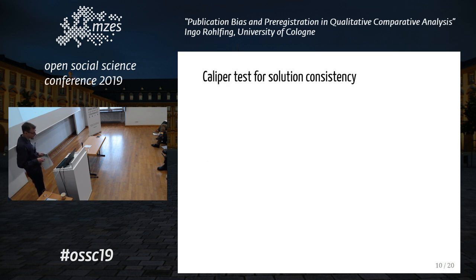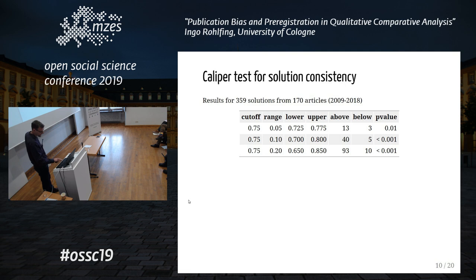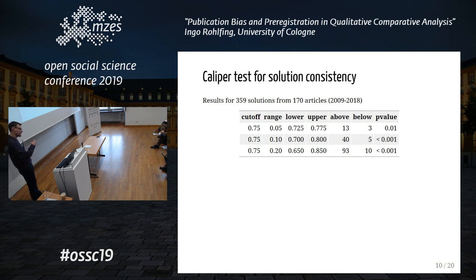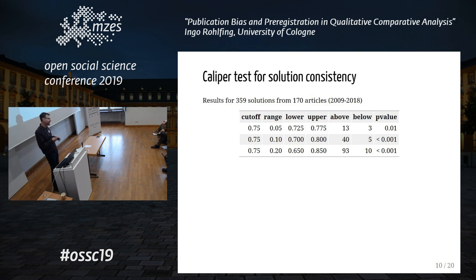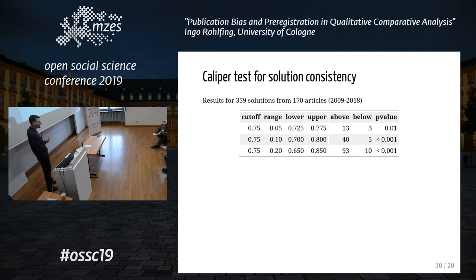Testing this formally using different ranges around the threshold, the most important result is for the smallest range: 30 values are above the threshold, only 3 are below it, giving a p-value of 0.01. That's evidence for publication bias. The p-value gets much smaller when you increase the range, but I think the smallest range is most important.